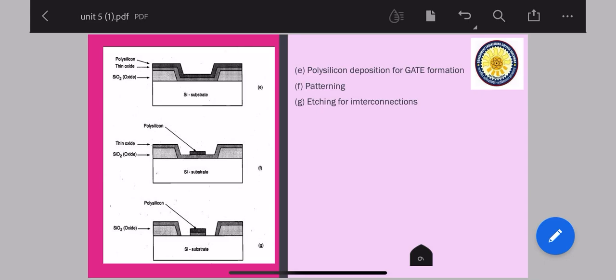So your undoped polysilicon has a relatively very high resistivity. It can be reduced by further doping it with your impurity atoms. So at last, in step number F, your polysilicon is patterned to form your gate structure. And at last your gate structures can be formed in your G diagram. And here the etching has been done for etching of your thin oxide layer for the interconnects.